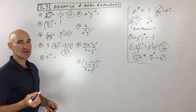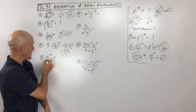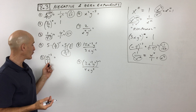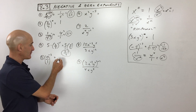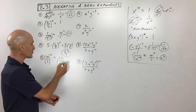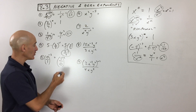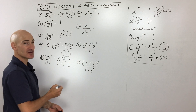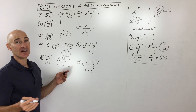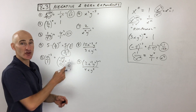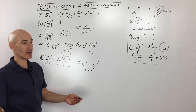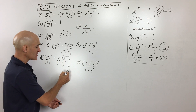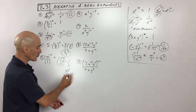Number 5 is a little challenging: 0 to the negative 3. Zero is really 0 over 1, and the negative tells us to flip it over — take the reciprocal — giving 1 over 0 to the positive 3. Distributing: 1 cubed is 1, and 0 cubed is 0, so we get 1 divided by 0. We can't divide by 0 — if 0 is in the numerator that's fine, but 0 in the denominator means undefined.